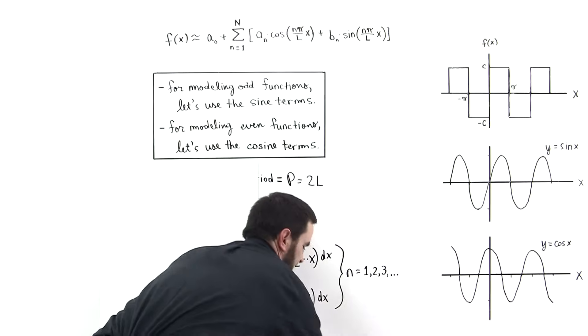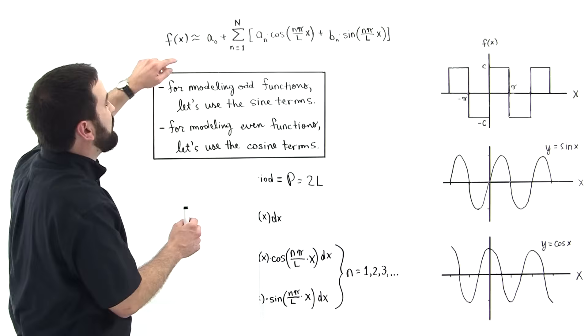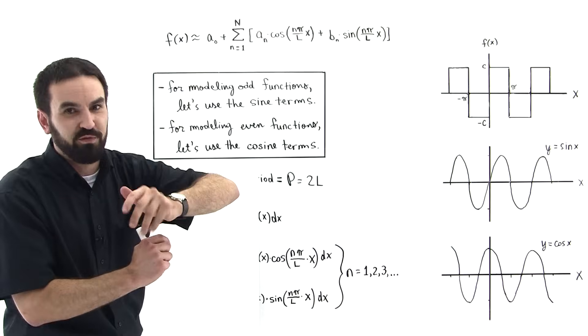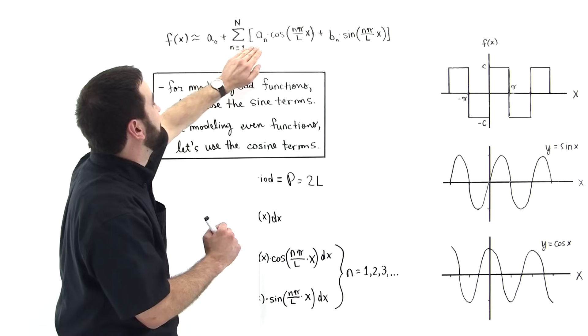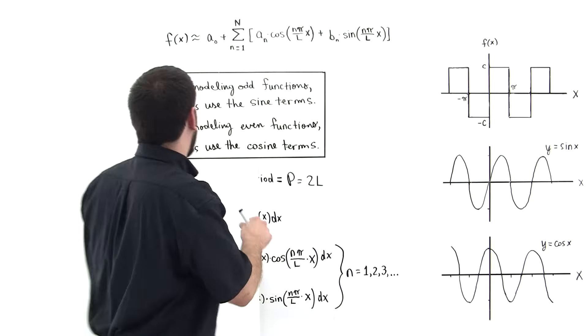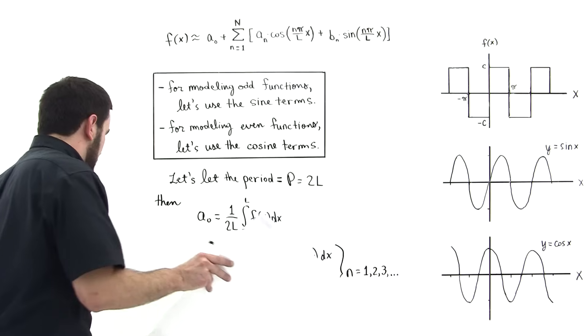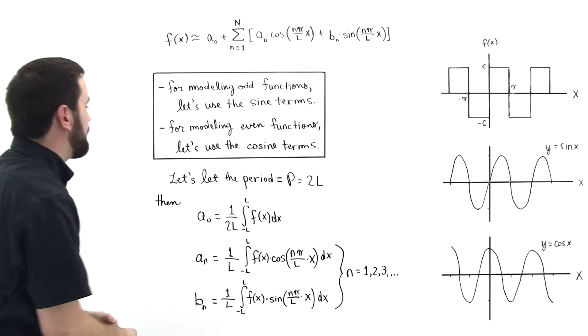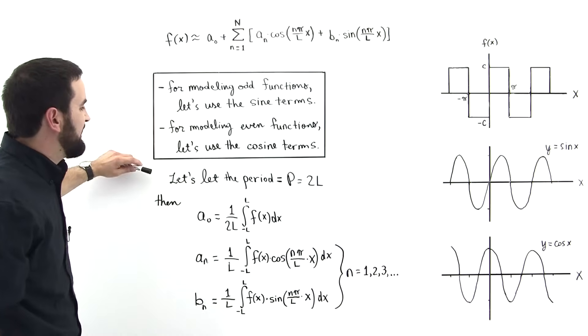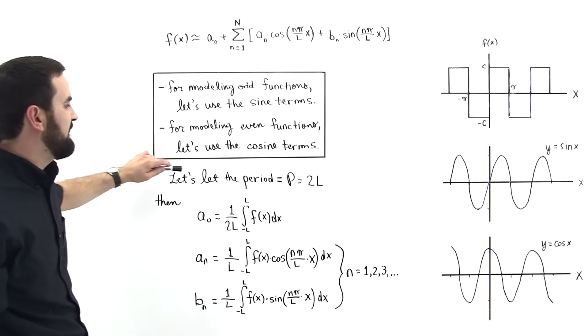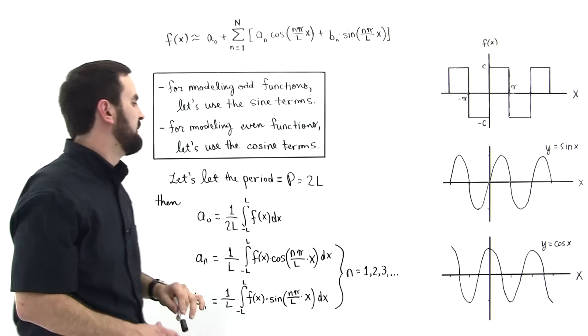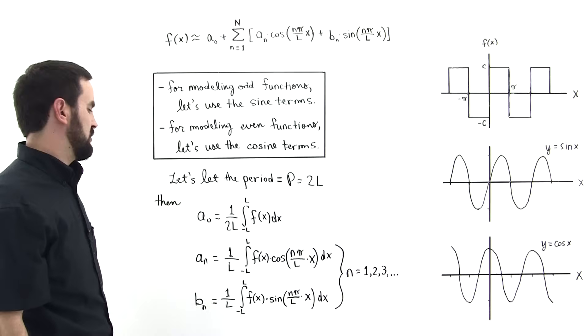Okay. Here we go. So, let's take a look. The next, the real, the hard part, the brilliance of Joseph Fourier, was identifying what these constants would be. And here they are. So, Joseph Fourier in the early 1800s said, what if we let the period be equal to 2L? Then these things would be true.